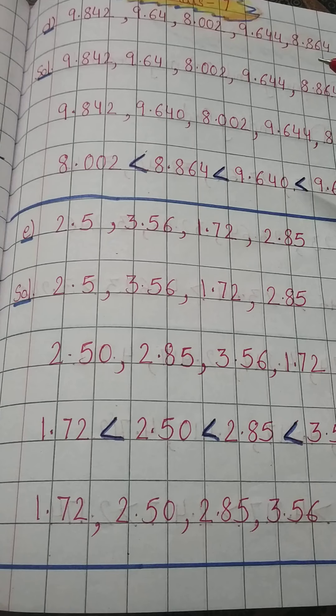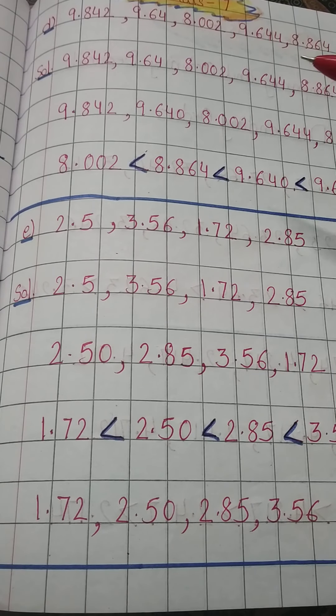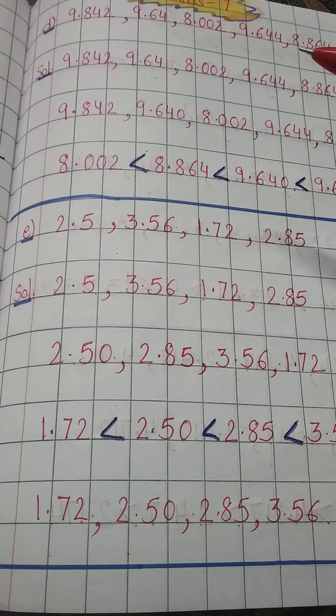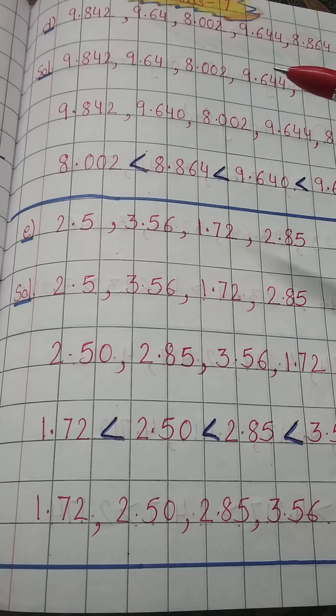So here is the question: 9.842, 9.64, 8.002, 9.644, and 8.864. We have to arrange these decimal numbers in ascending order. So ascending order means increasing order, right? So we will go for the least number.